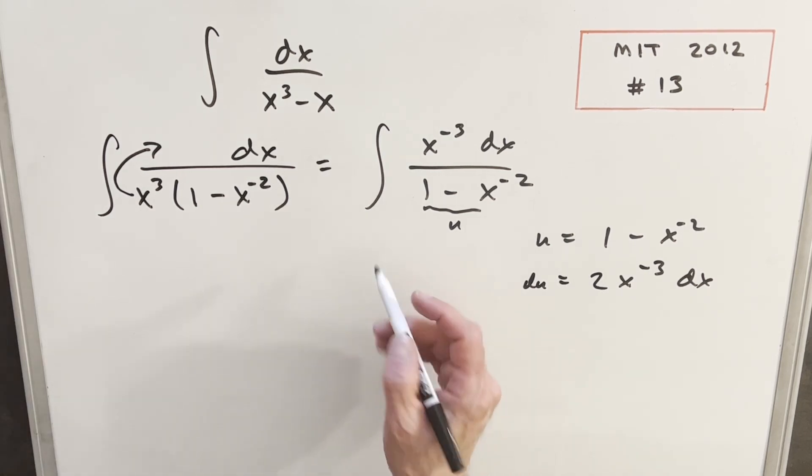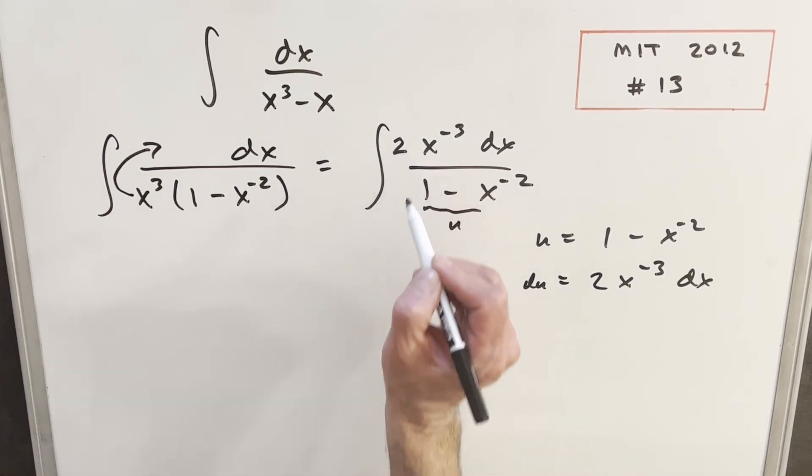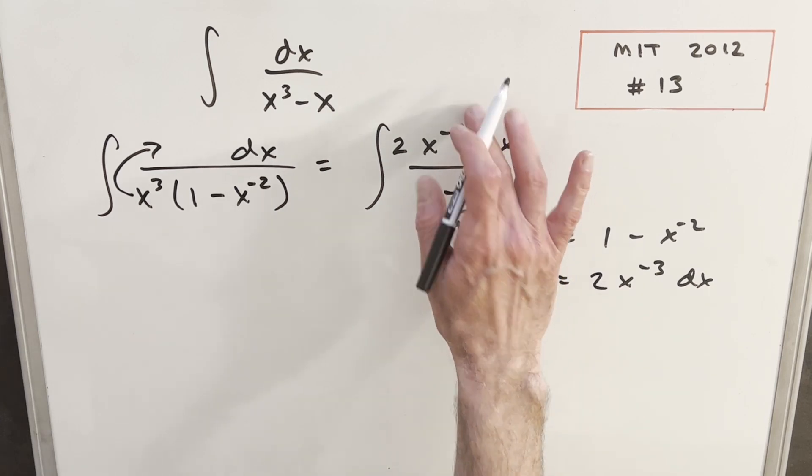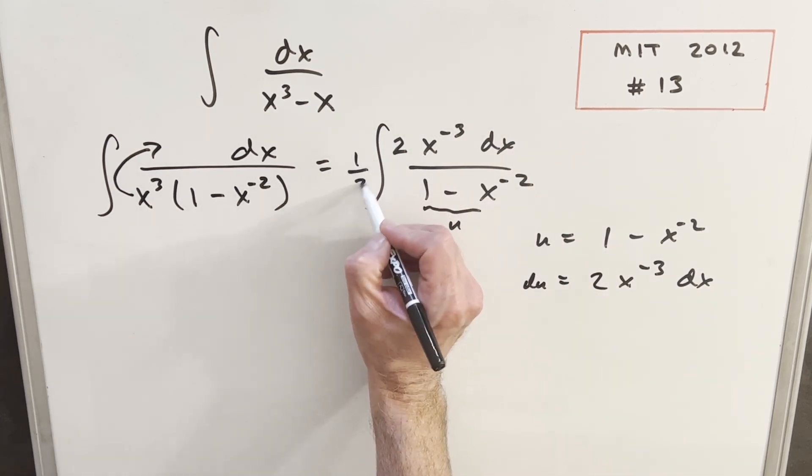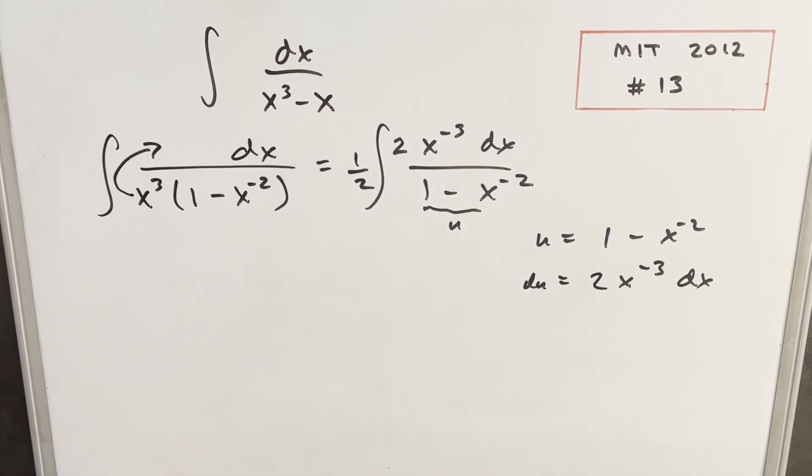And just to make this u-substitution really convenient, I'm just going to create a 2 right here to set it up so that this is exactly our du in the numerator. But then we'll need a half out front so I don't change it. And now we can make our u-substitution. So we'll have our one-half in front, our du in the numerator, and just a u in the denominator.